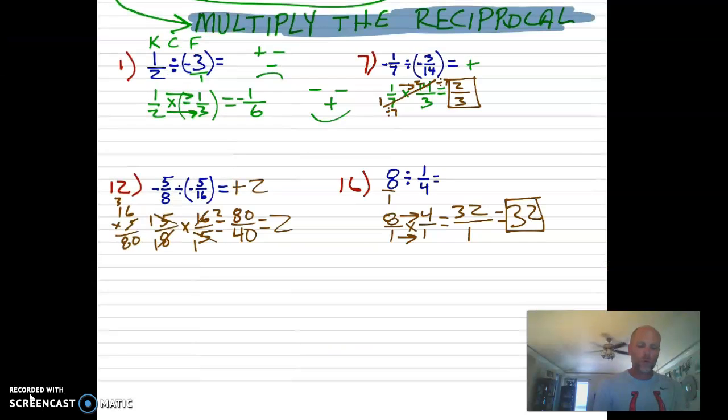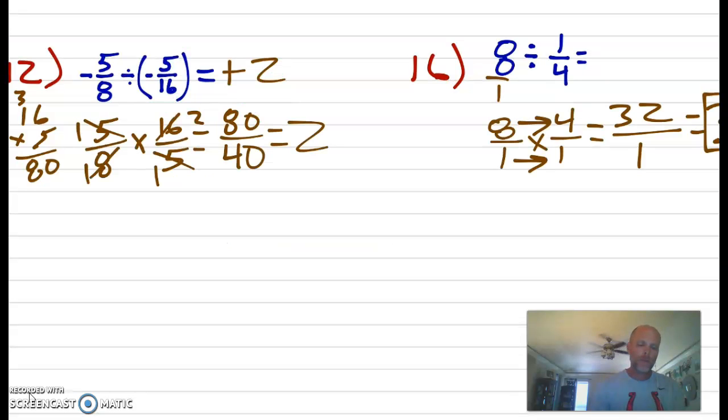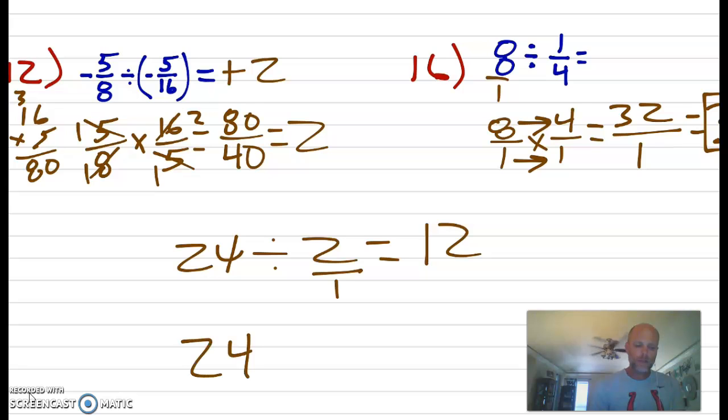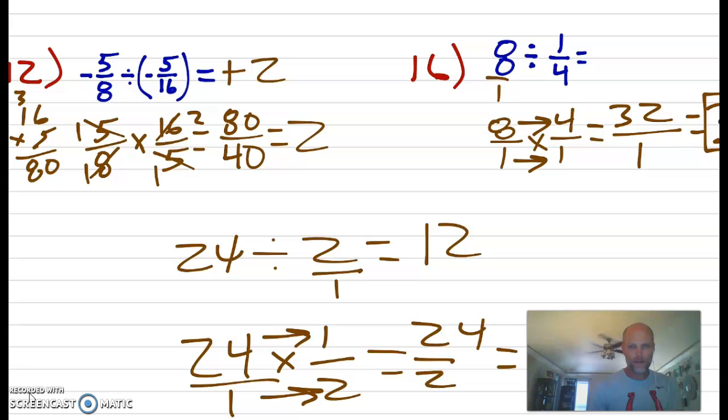So why does the reciprocal work? I've got fifty seconds to do this. We're going to split a class in two. There are twenty-four kids. If we split something in two, that means we're dividing by two. Well, what's twenty-four divided by two? It's twelve. We'd split it in half. What's the reciprocal of two? As a fraction, it's two over one, right? So the reciprocal would be one over two. And guess what? When you multiply across, twenty-four times one is twenty-four. One times two is two. And guess what the answer is? Twelve.